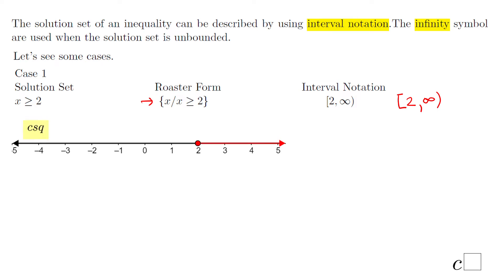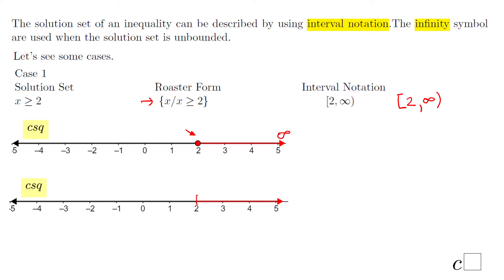Let's see the graphical way. A full dot at two, and then shaded — the number line is shaded towards the right, towards infinity. That is the solution set. The second form: instead of a full dot, we have a bracket, which is open towards the shading, towards the solution set.